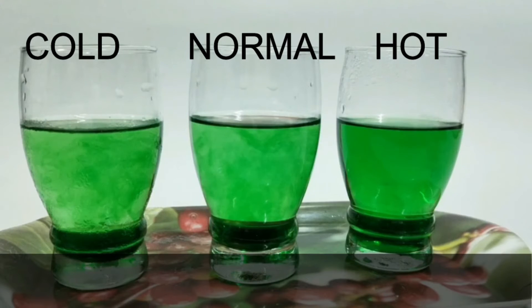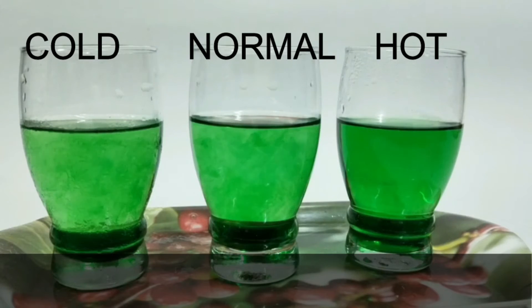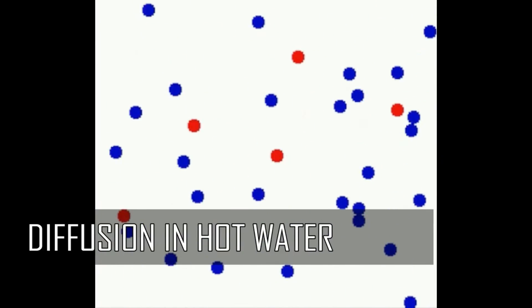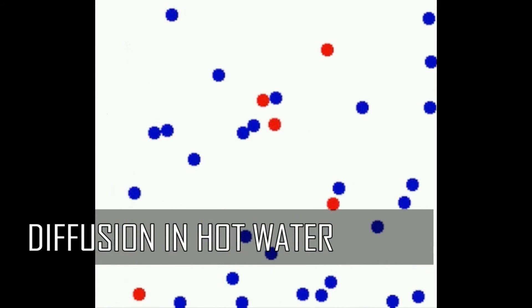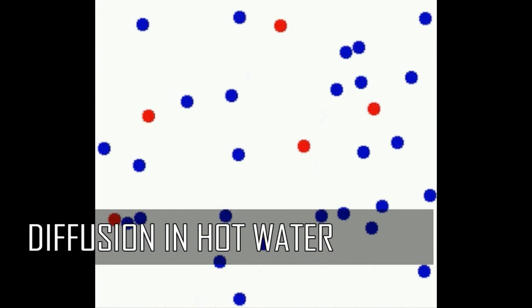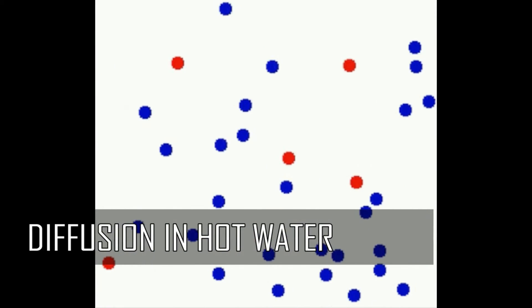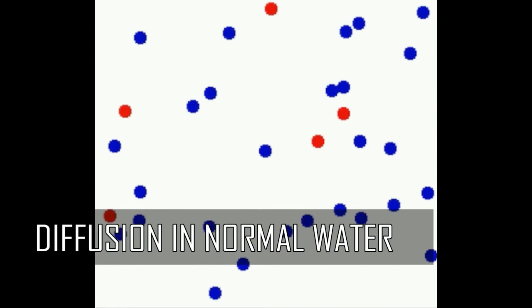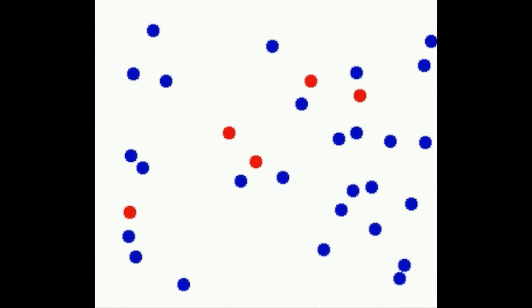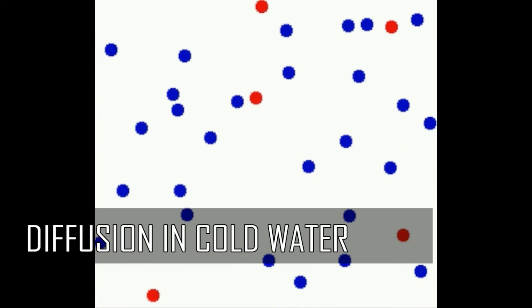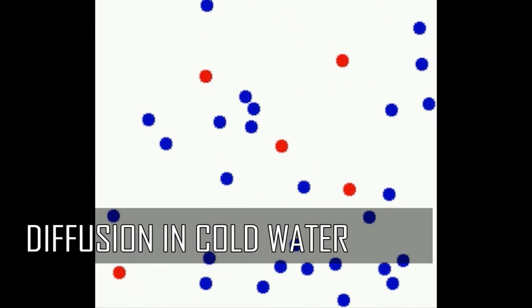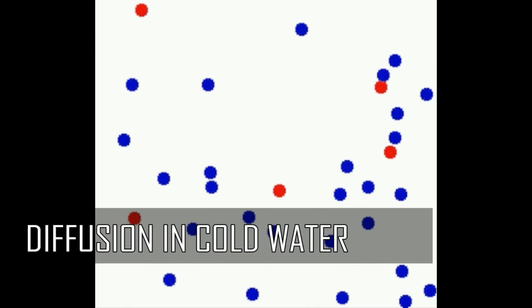Let us understand this with the help of a graphic. The blue dot represents the molecule of water, while the red dot represents the molecule of liquid food coloring. The molecular movement in hot water is quite high due to higher kinetic energy. When compared to normal water, the molecules move at a moderate rate. In cold water, the molecules move at a much slower rate.